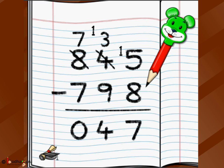This is the borrow logic: whenever the digit you are subtracting from is smaller, borrow from the neighbor to the left and reduce that neighbor's value by 1. That's all for now, children. Do more practice — this looks complicated but you can do it very easily with lots of practice. Bye bye!